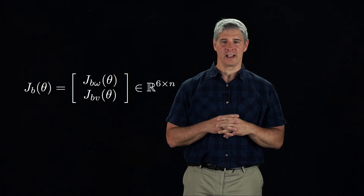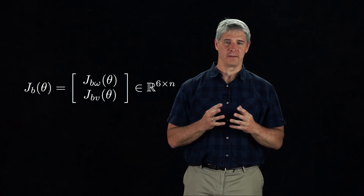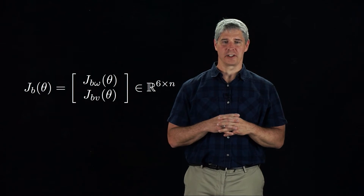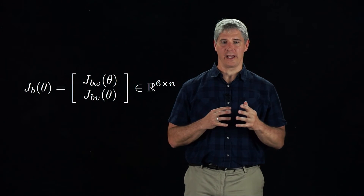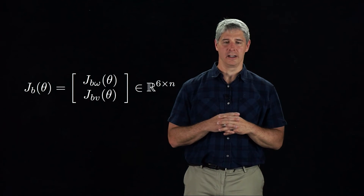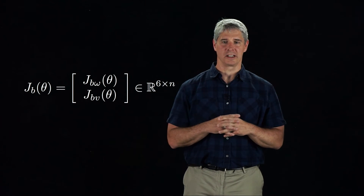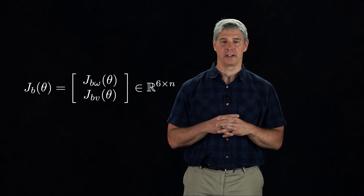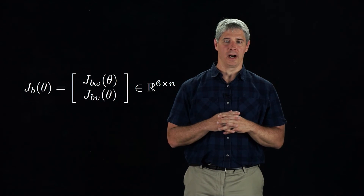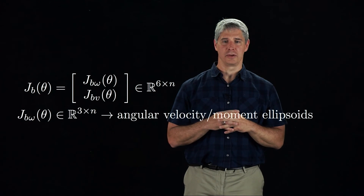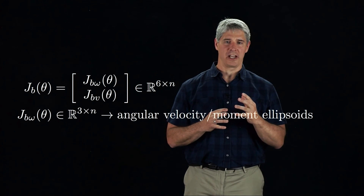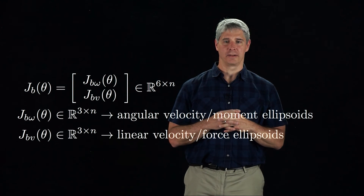Finally, consider the case that the Jacobian corresponds to the body Jacobian derived in this chapter. The 6 by n body Jacobian can be split into the 3 by n angular velocity Jacobian JB-omega, and the 3 by n linear velocity Jacobian JBV. The separation into linear and angular components is useful because the units of the angular velocity and linear velocity are different. Then for any configuration of the robot, JB-omega can be used to create angular velocity manipulability ellipsoids and angular moment ellipsoids, and JBV can be used to create linear velocity manipulability ellipsoids and linear force ellipsoids.